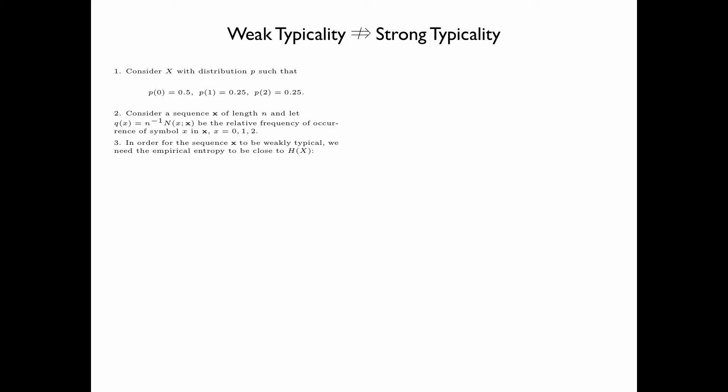In order for the sequence x to be weakly typical, we need the empirical entropy to be close to the entropy of x. We are going to see how to choose the relative frequency q(x) to make this happen. The empirical entropy is equal to minus 1 over n times log of p(x), which equals minus 1 over n times the summation from k equals 1 to n of log p(x_k).